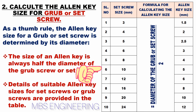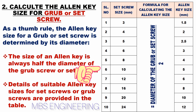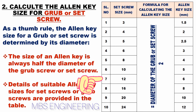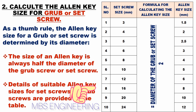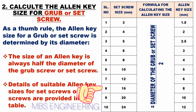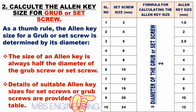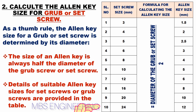Continuing the table: for a set screw of 10 mm, the suitable allen key size is 5 mm. For 12 mm, the allen key size is 6 mm. For 16 mm, the allen key size is 8 mm. For 20 mm, the allen key size is 10 mm. For 24 mm, the suitable allen key size is 12 mm.